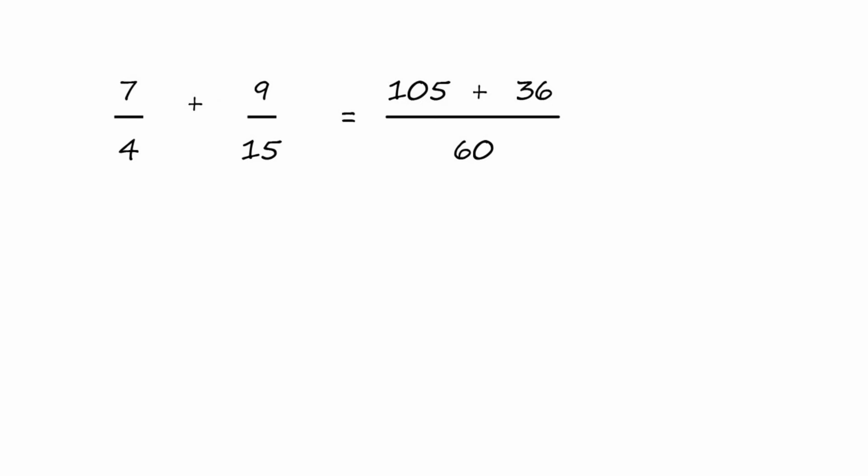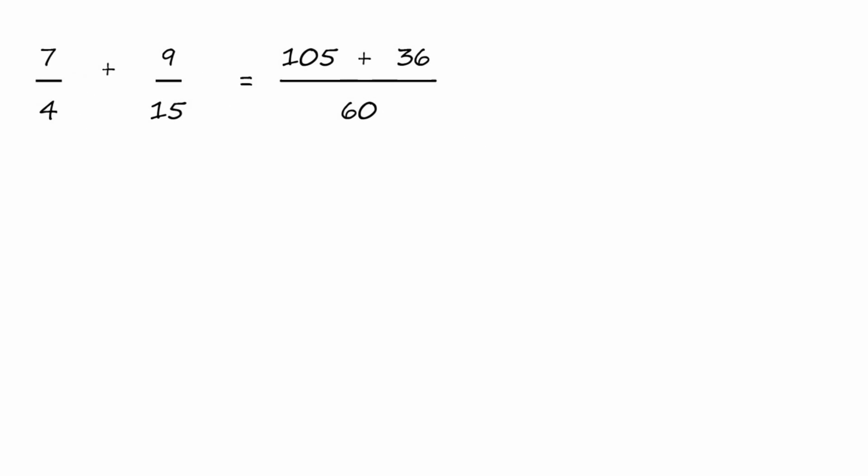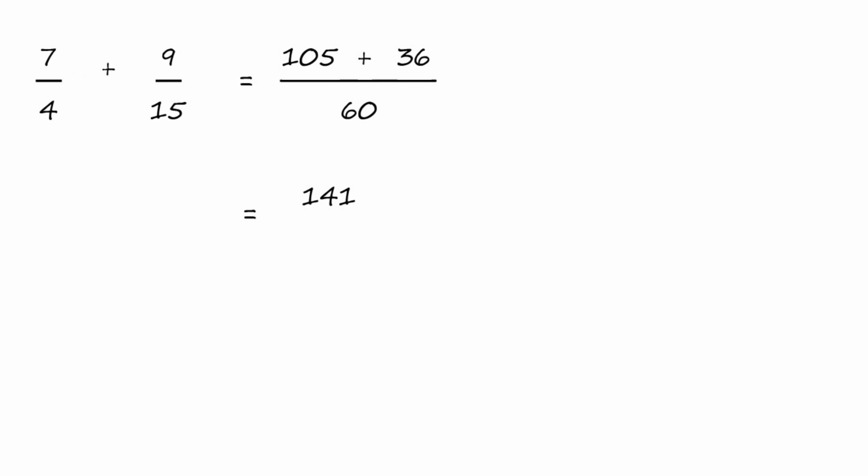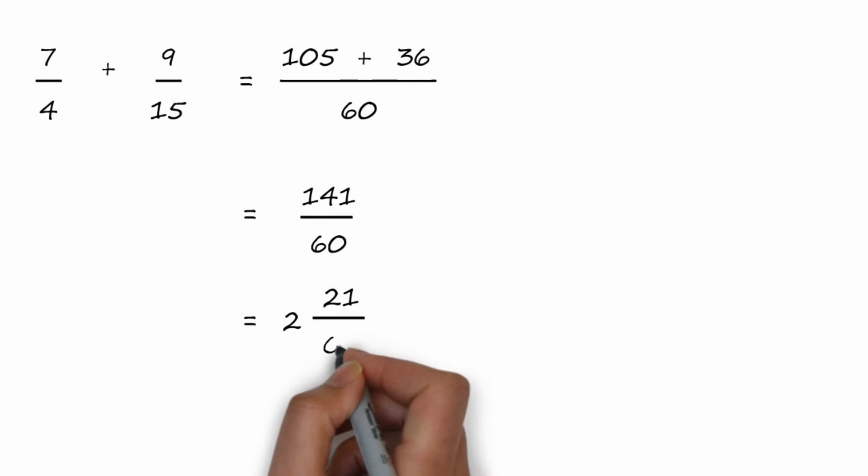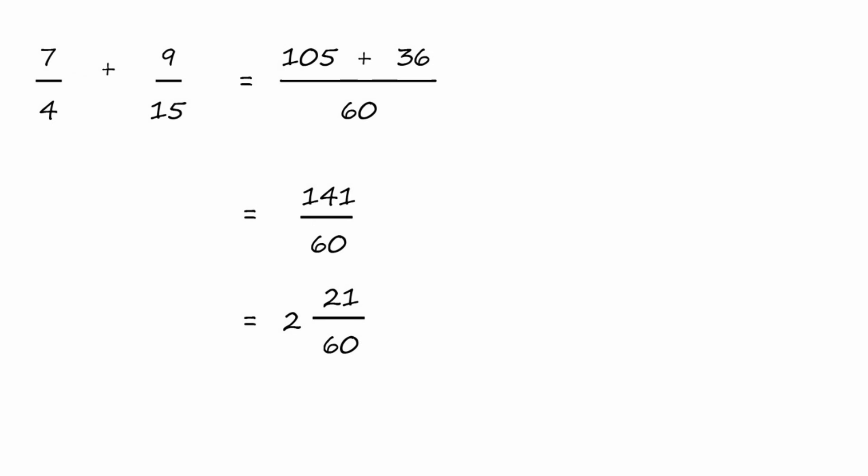Now we add up 105 and 36, and we get 141, and it's all over 60. We can simplify this by dividing 60 into 141, which goes twice, remainder of 21 over 60. And we can divide out a three, so it would be two and seven-twentieths in our answer.